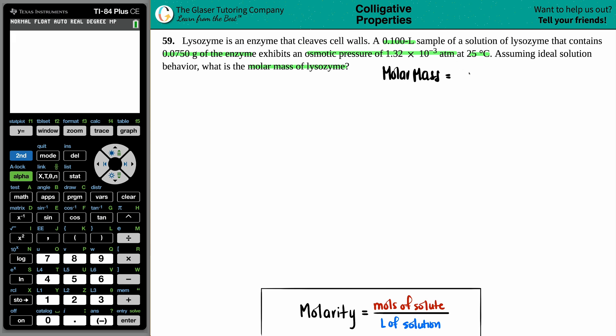Well, remember, a molar mass is just like a fraction, right? It's always grams per mole. So it's grams of that certain substance divided by the moles. Now, if we want to find the molar mass of the lysozyme, it's got to be how many grams I have of that lysozyme divided by the moles of how much I have of that lysozyme.